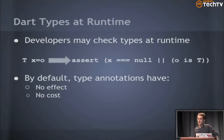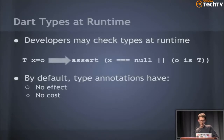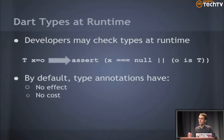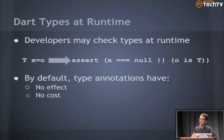The types can also be thought of as assertions. You have a type T, a variable X, and a value O — it's like saying assert either X is null or X is T. When you write these types, that's essentially what you're saying. Your tools or your check-mode program will check these things for you, kind of like you wrote an assertion, but types are a little bit easier to express than assertions everywhere.